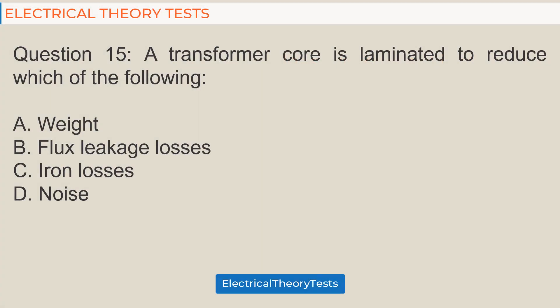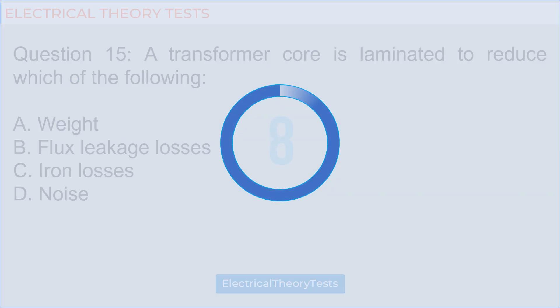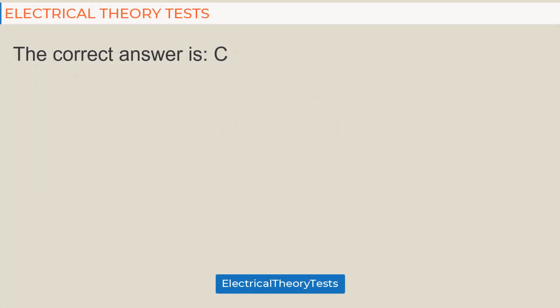Question 15: A transformer core is laminated to reduce which of the following? A. weight, B. flux leakage losses, C. iron losses, D. noise. The correct answer is C.